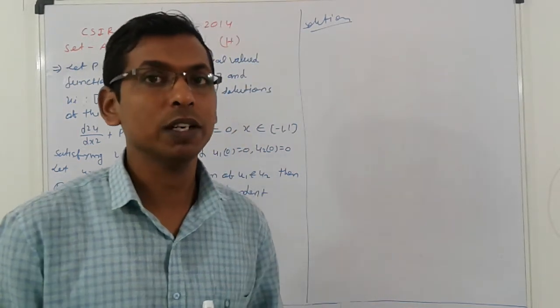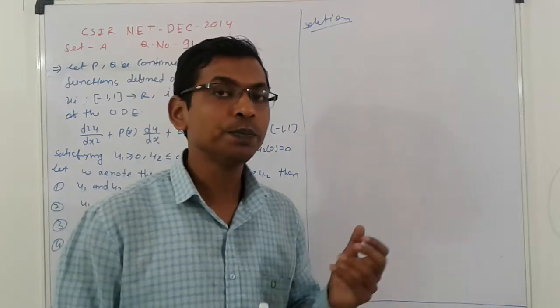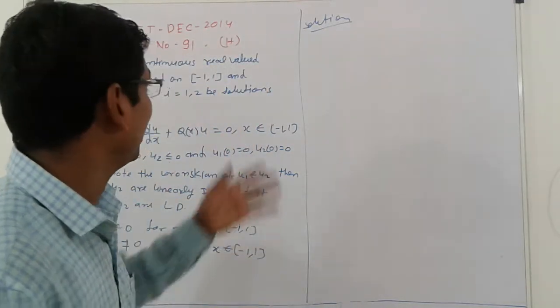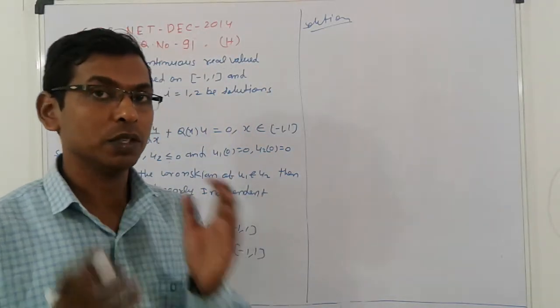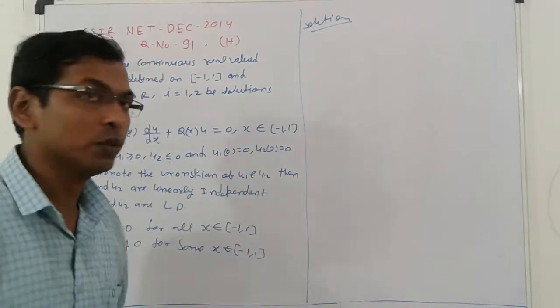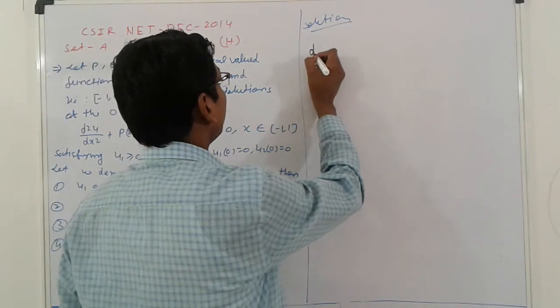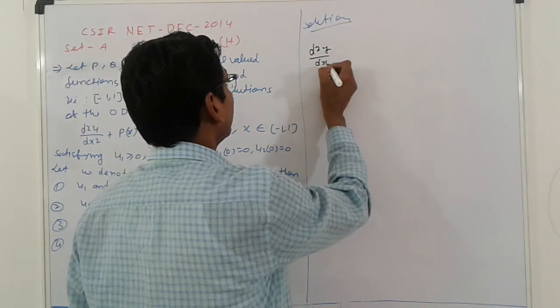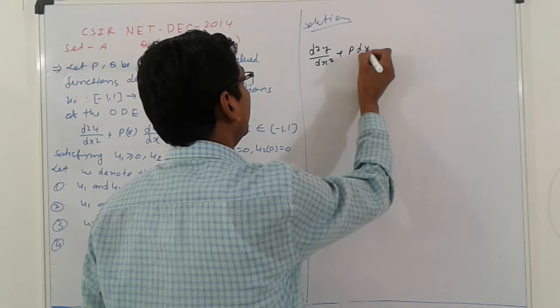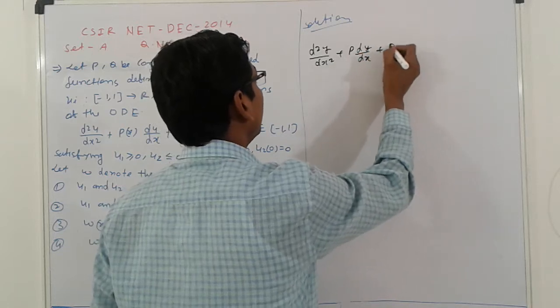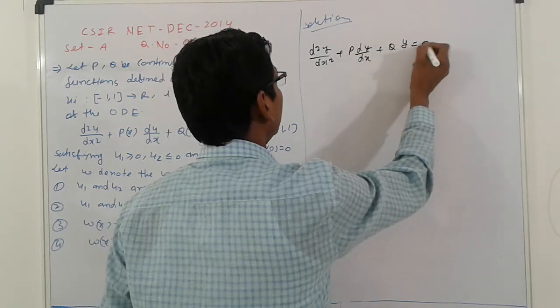Previously we solved Raskian problems. It is also very simple and logical questions. If you can understand this one or two lines are answered. First I will give you some information. Suppose D2Y/DX square plus P D1Y/DX plus Q equals 0.